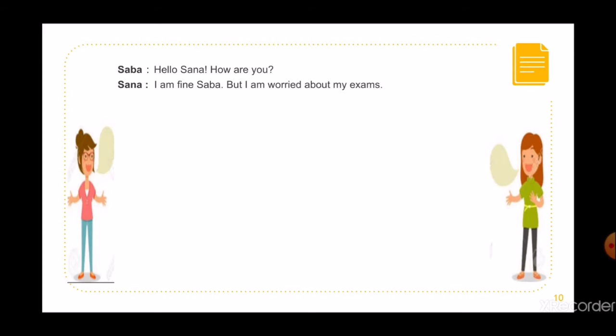Saba: Hello Sana, how are you? Sana: I am fine Saba, but I am worried about my exams — they are going to start and I have little preparation. Notice that the statement of the second character has not completed in a single line and we continued the sentence from where the dialogue started, not from where we wrote the names. The name should come under the name and dialogue must be written below the dialogue. This is the format in which the dialogue is written — it gives us a unified and organized look.